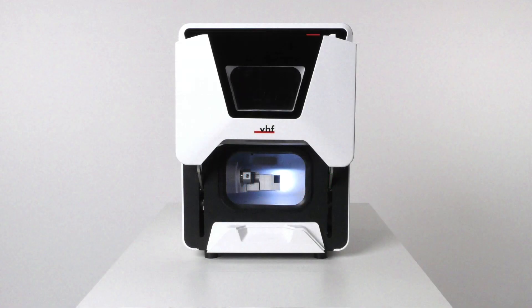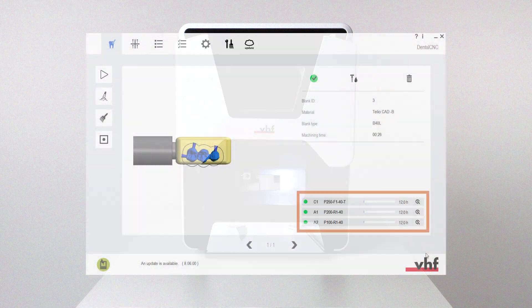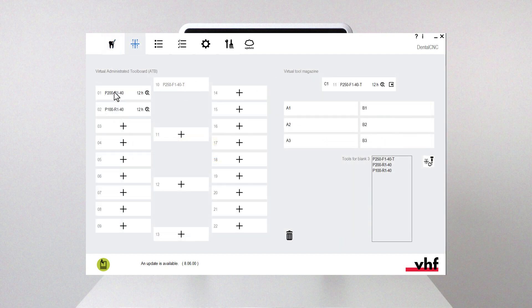The machine requires different tools for the different machining strategies during a job. Dental CNC shows the tools needed for a job in the machining view. Tools are assigned via the virtual tool magazine in Dental CNC.